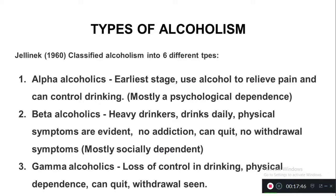The second type is beta alcoholics — heavier drinkers than alpha alcoholics. They drink daily and have physical symptoms like tremors, and sometimes gastritis, but they are not addicted. They can quit alcohol easily, have no withdrawal symptoms, and can stop drinking for long periods. They are socially dependent, not physically or psychologically dependent.